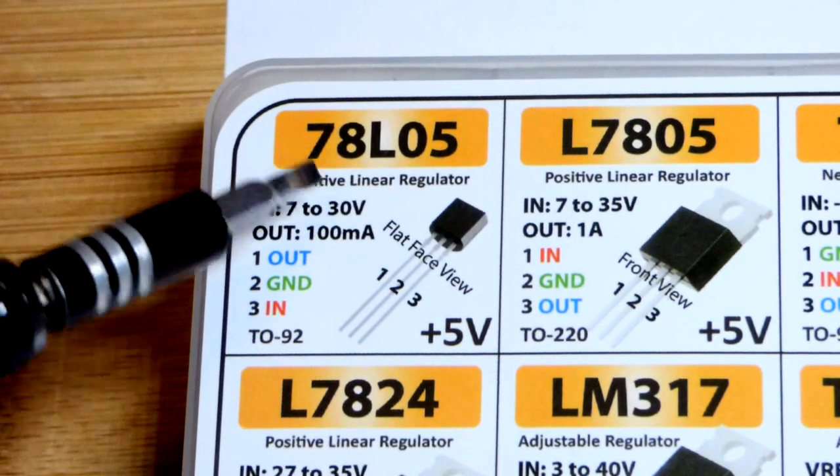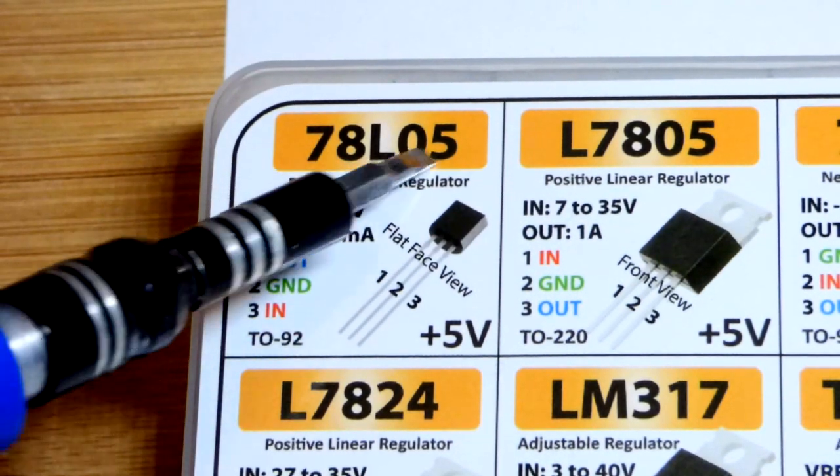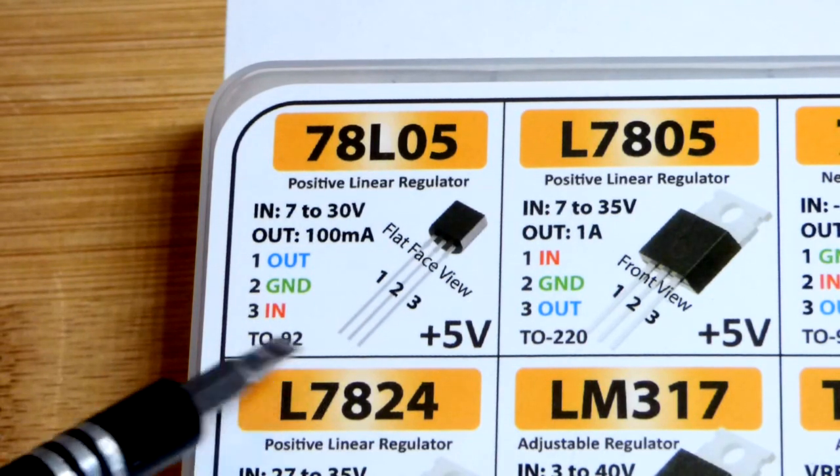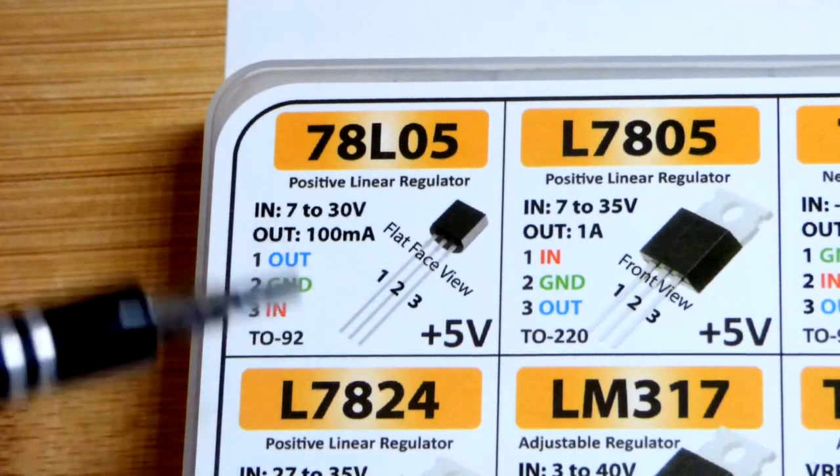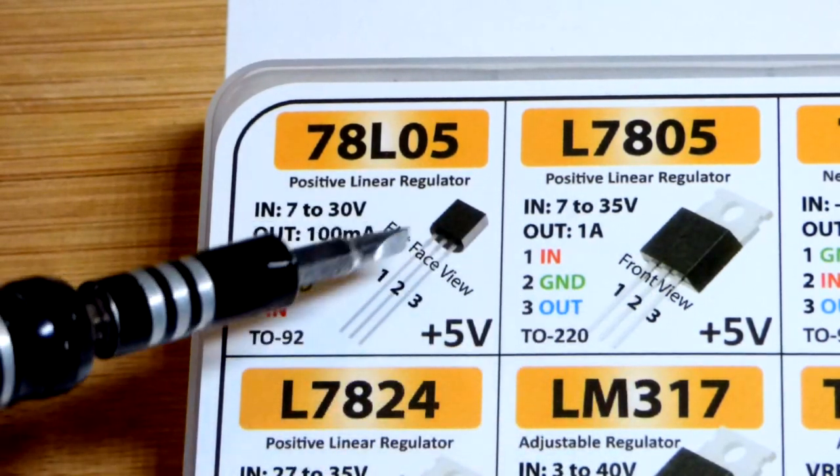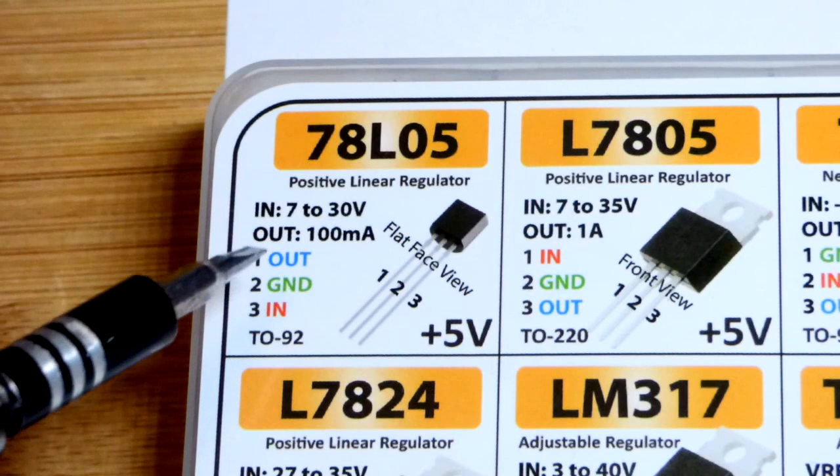So now in this video we're going to look at a 78L05 that I got from this new kit that I bought. There's 10 of them in this kit. Most of these have either 2 or 5 components. This particular one has about 10.